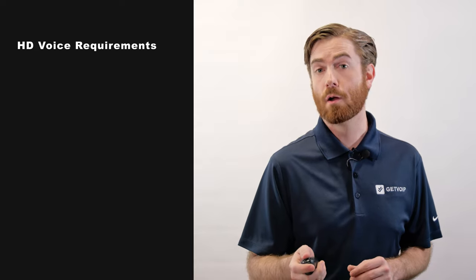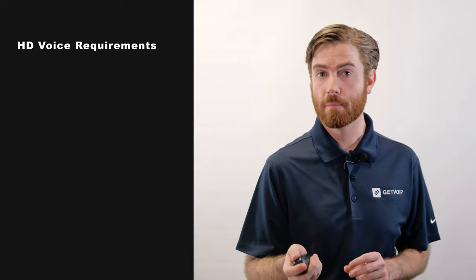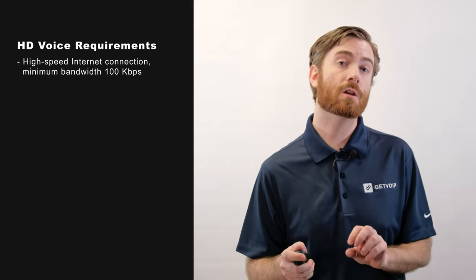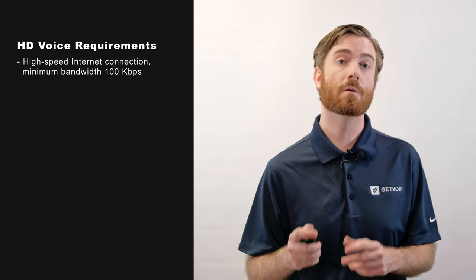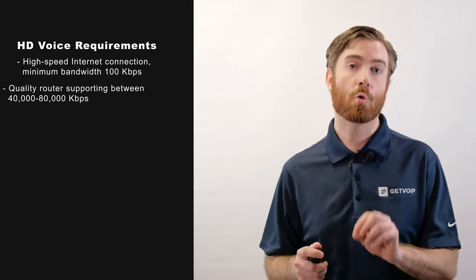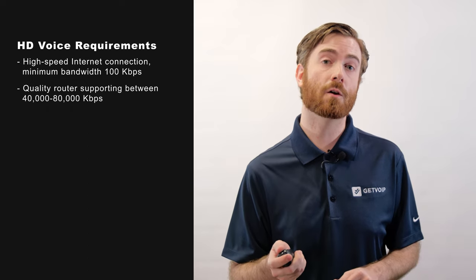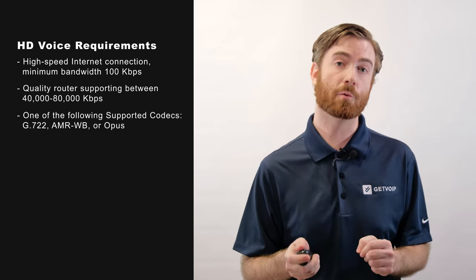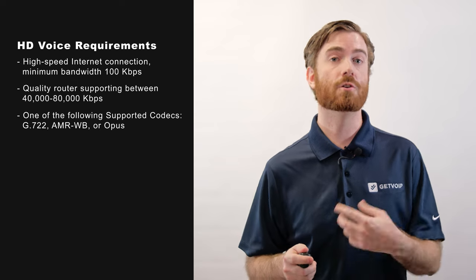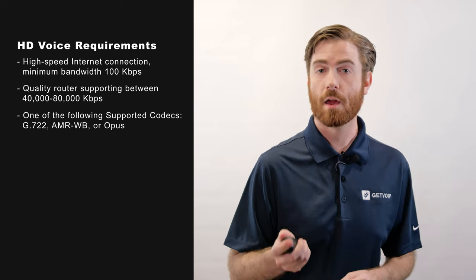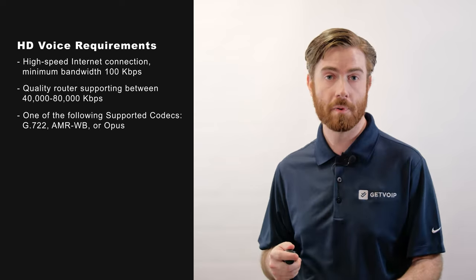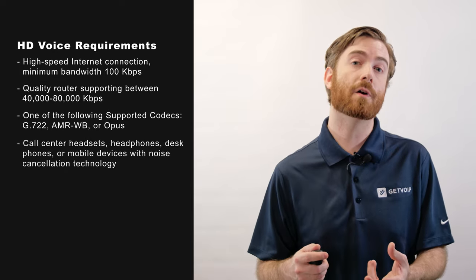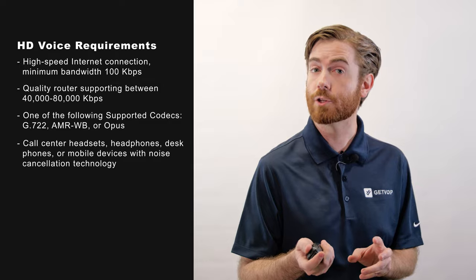Hardware and bandwidth requirements for HD voice include a high-speed internet connection with a minimum bandwidth of 100 kilobits per second per VoIP call, a quality router supporting between 40,000 and 80,000 kilobits per second, one of the following HD-supported codecs — G722, AMR-WB, or Opus — and call center headsets, headphones, desk phones, or mobile devices with noise cancellation technology.